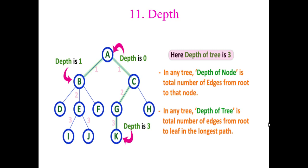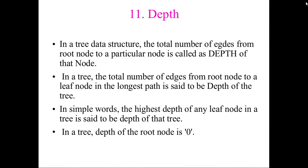Next, what is depth? For depth, you start from the root. The total number of edges from the root to that node is called the depth. For example, the depth of F is two edges from root to F. For J, you count edges from the root node down to J — that is the depth.